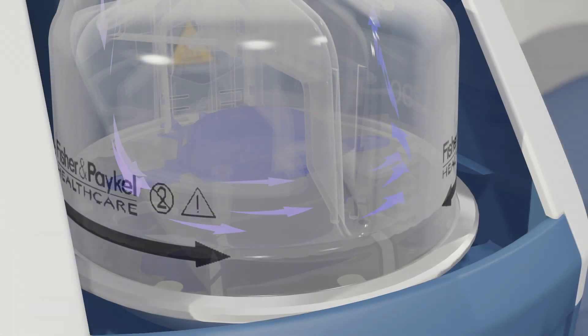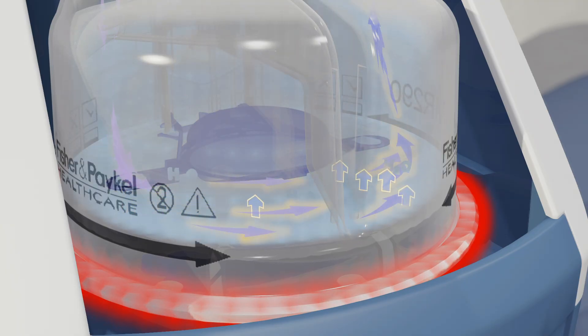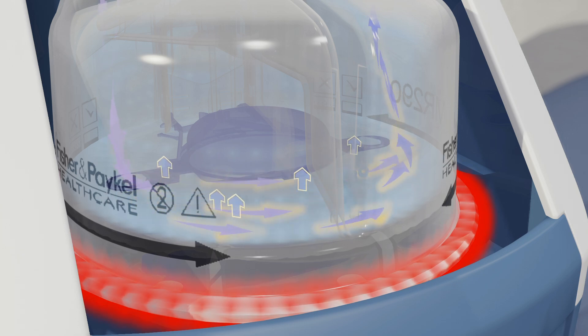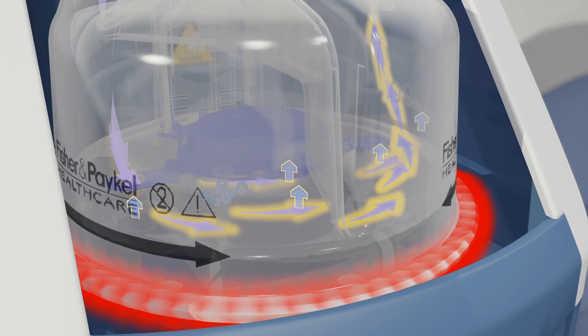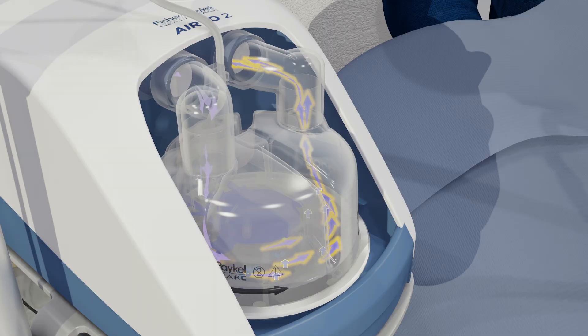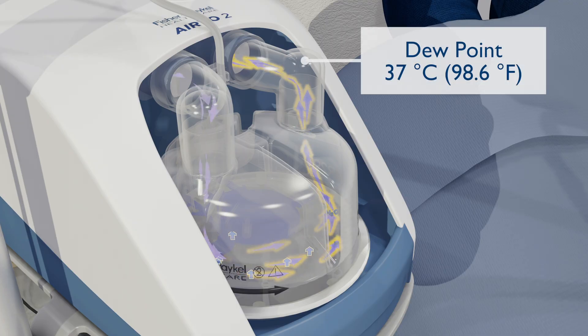A float in the chamber maintains the water level at a fixed height. A heater plate warms the water, which in turn warms and humidifies the respiratory gas passing through the water chamber to body temperature and humidity. The respiratory gas leaving the chamber is regulated to a dew point temperature, normally set to 37 degrees Celsius.